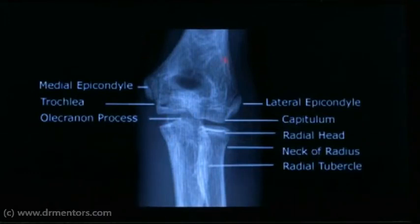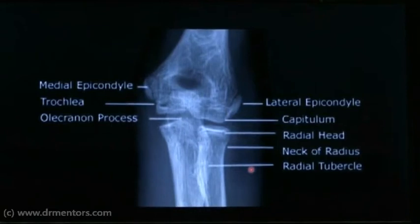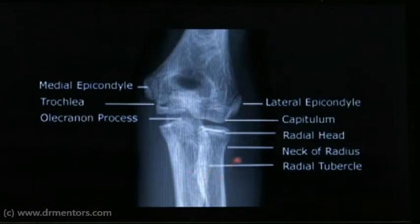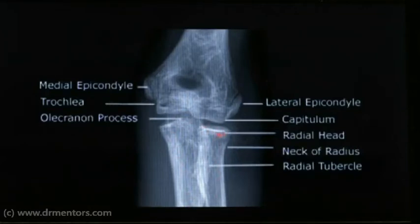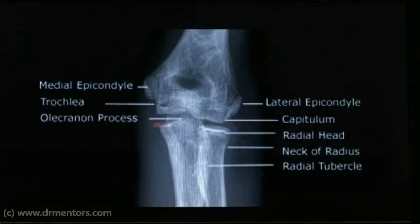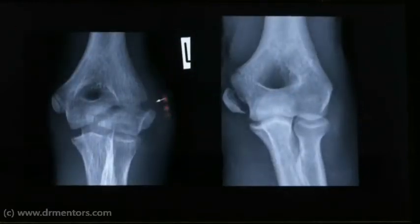This is an X-ray of the elbow. You may be asked to identify the radius, ulna, olecranon, medial epicondyle, and lateral epicondyle. The humerus is visible, and the paired forearm bones are radius and ulna. The olecranon goes behind the humerus and sits in the trochlea, making this bone the ulna; the other is the radius with the radial head and radial tubercle. Radius is on the lateral side, so the corresponding epicondyle is the lateral epicondyle. Ulna is on the medial side, so the corresponding epicondyle is the medial epicondyle.